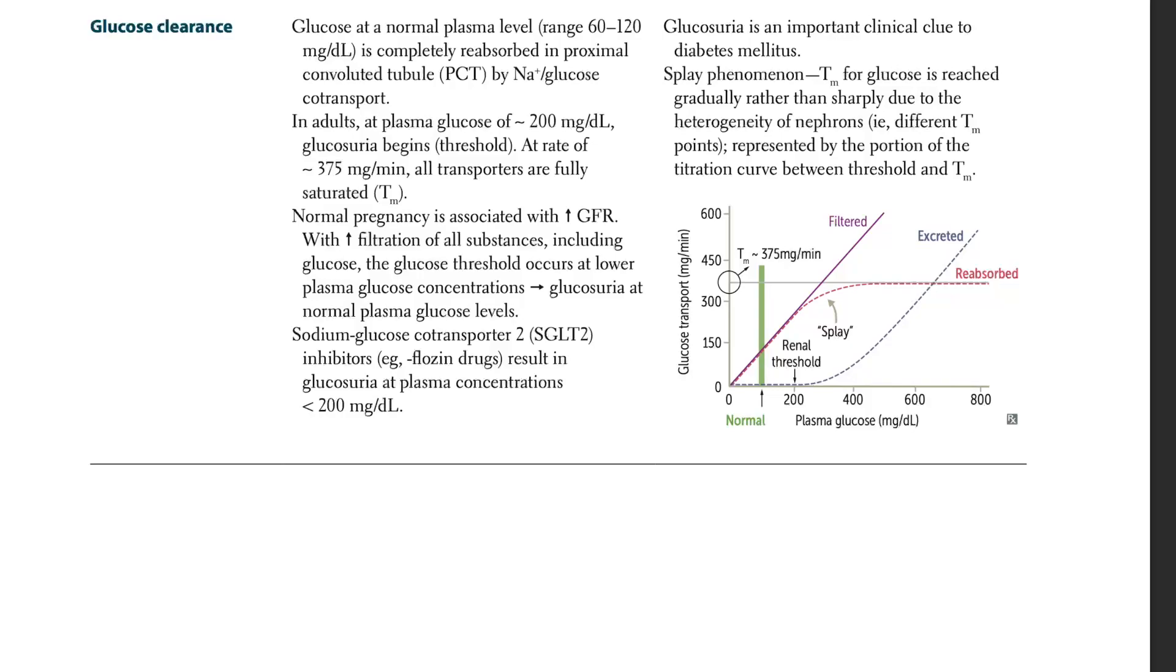Let's talk about glucose clearance. Glucose clearance at normal plasma level ranges from 60 to 120 mg/dL. The normal glucose plasma level is 60 to 120. Less than 120 is good, but when you're greater than 126, you call it diabetes. That also depends on whether you're fasting or if it's random, you're looking at greater than 200.